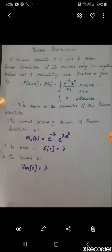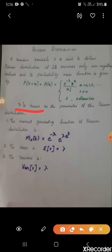Here λ is known as the parameter of the Poisson distribution. In binomial distribution x varies from 0 to n, but in Poisson distribution x takes values from 0 to infinity. The parameter of the Poisson distribution is λ.